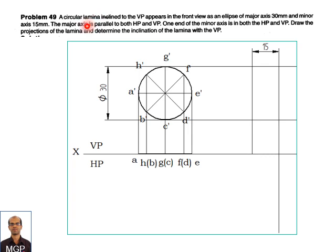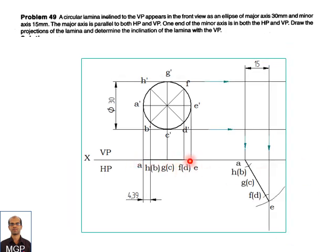In the given question, the circular lamina is inclined to the VP and appears in the front view as an ellipse with major axis 30 mm and minor axis 15 mm. First, draw a horizontal projector — this is 30 mm and here it is 15 mm. The ellipse will appear in the front view. Draw a vertical projector line. In the top view, the length is 30 mm. Take A as center with 30 mm radius, cut the arc on this vertical projector, and join the straight line. This is the lamina when it appears as an ellipse — this is the inclination.